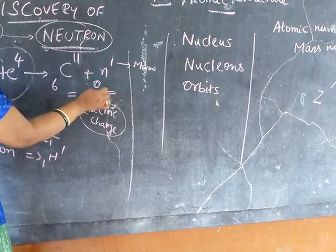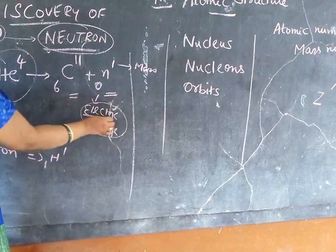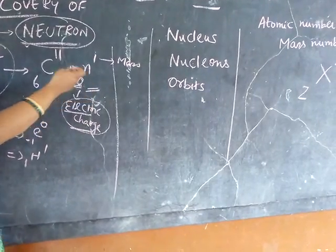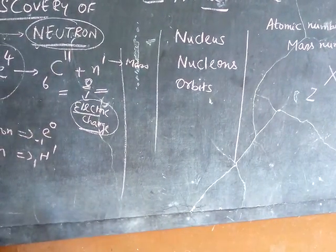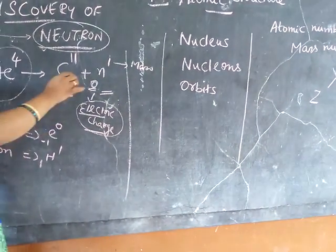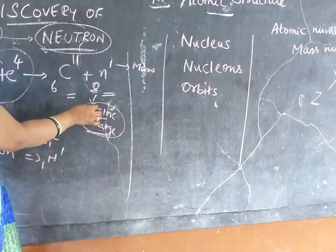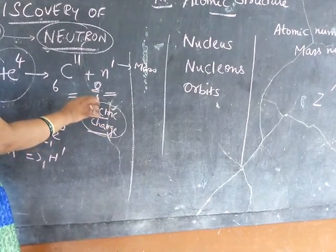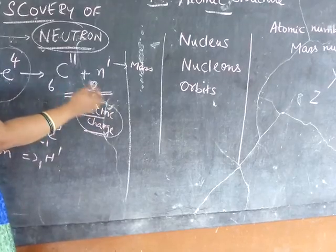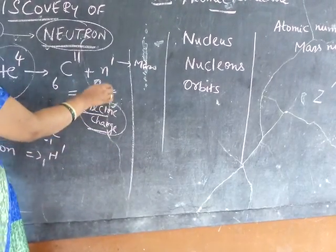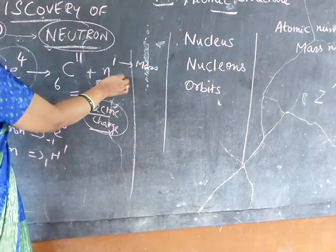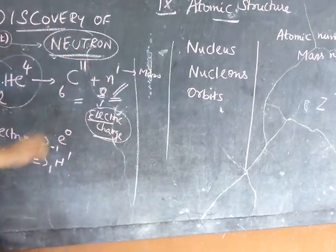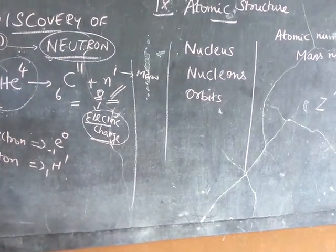He found that there is some particle which doesn't possess any charge. It represents electric charge zero, which shows that it doesn't carry charge itself — positive or negative. He found that some kind of particle which doesn't possess electric charge is obtained. Later he named it as neutron. Likewise, neutron was discovered.